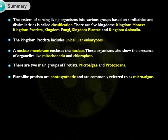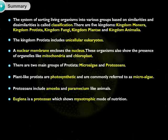Plant-like Protista are photosynthetic and are commonly referred to as microalgae. Protozoans include amoeba and paramecium-like animals. Euglena is a protozoan which shows mixotrophic mode of nutrition.